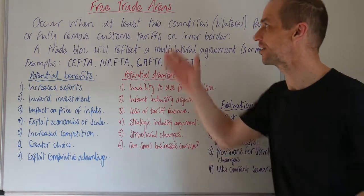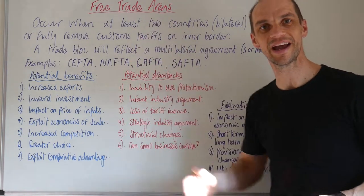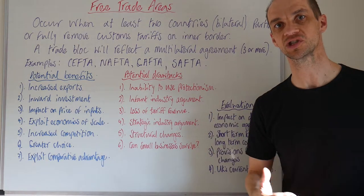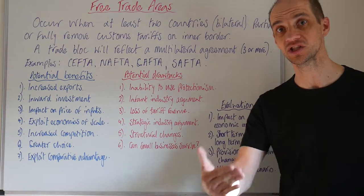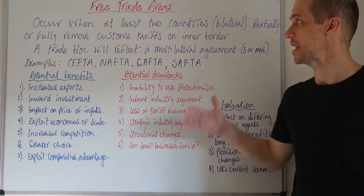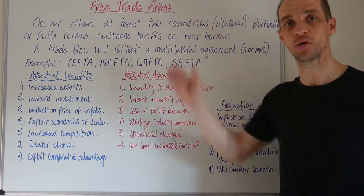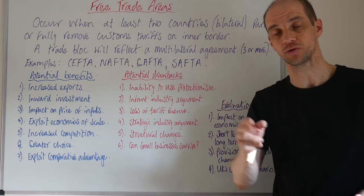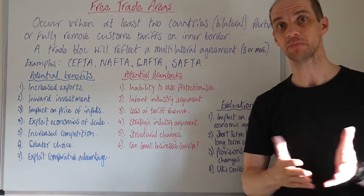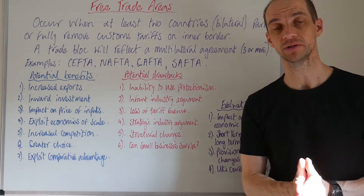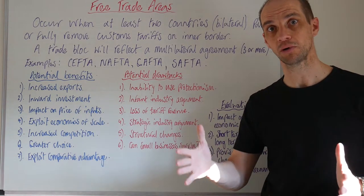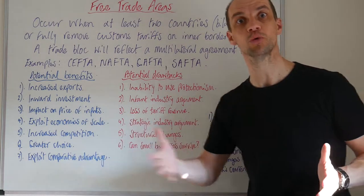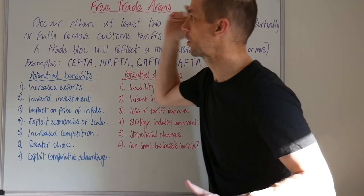Hi guys, so let's now take a look at free trade areas. This is of course one of the first steps involved in actually integrating economically. Now these free trade areas can be bilateral, which represents two member countries, or they can be multilateral agreements, which reflects a trading block of three or more countries. So let's take a look.